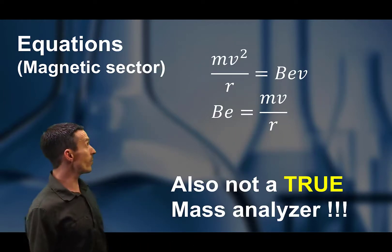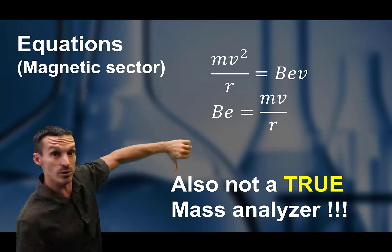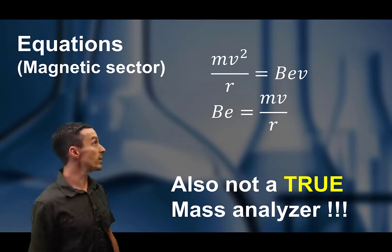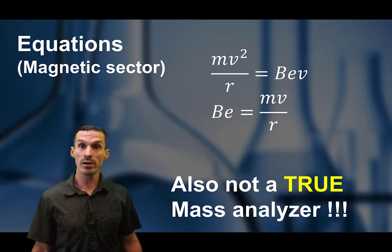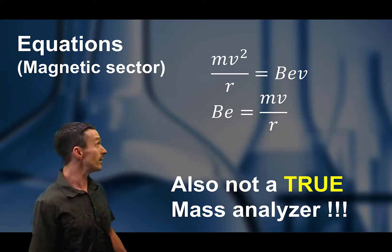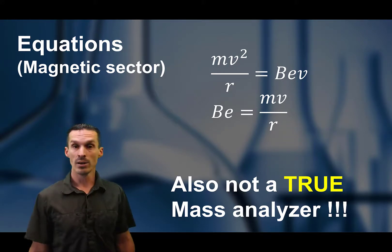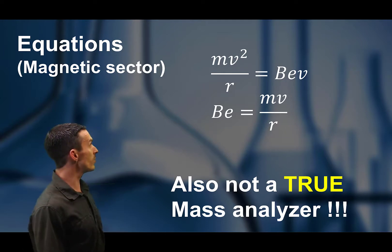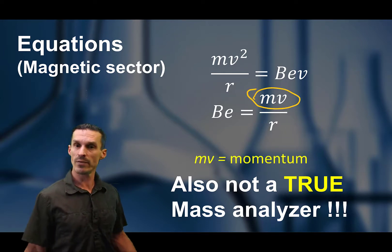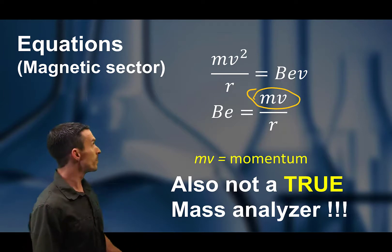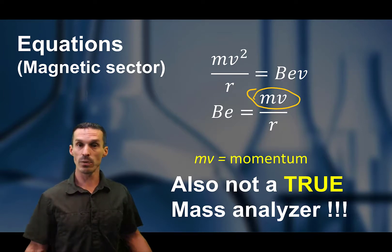So again, we are equating the equations of the force moving up and the force pushing down, and you get what you see over here. mv squared over r is proportional to B times e times v, the velocity. So you do a little bit of rearranging, and what you get in the equation is an mv term.